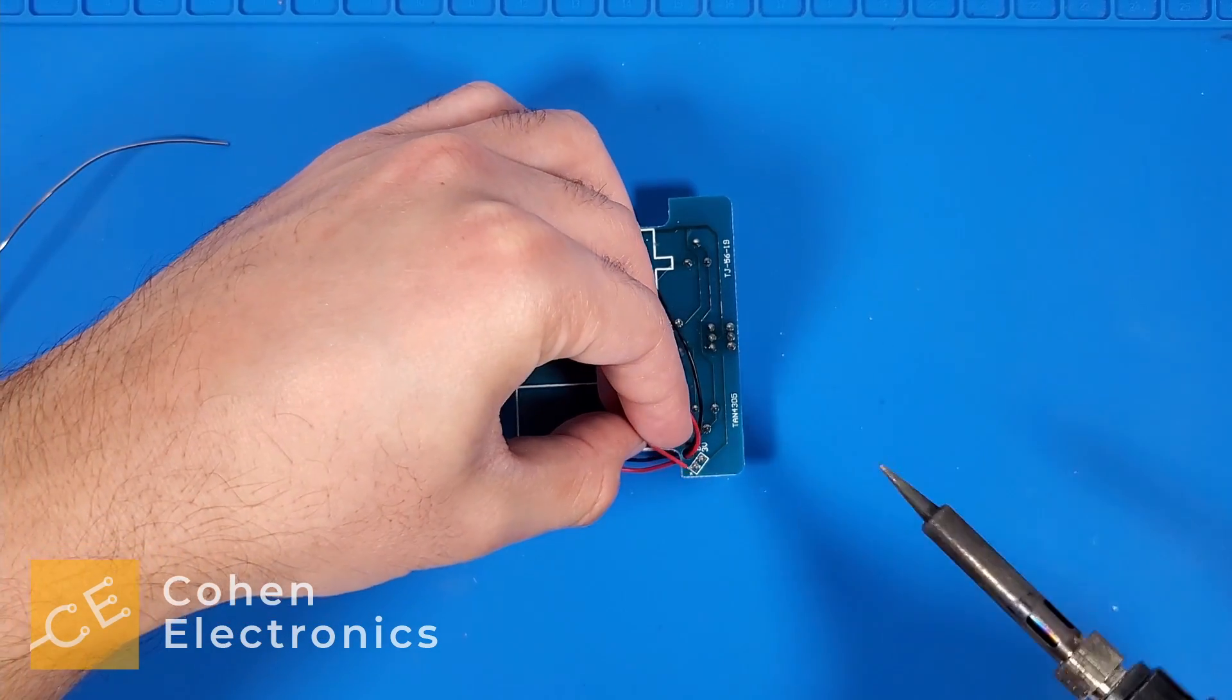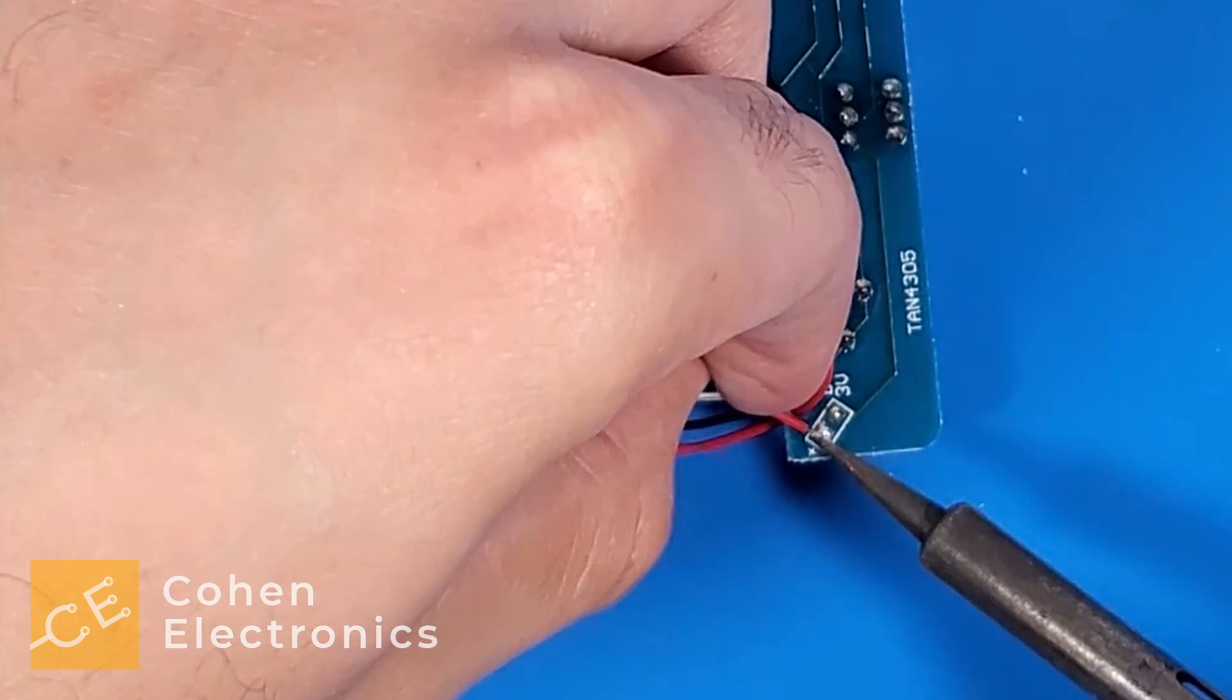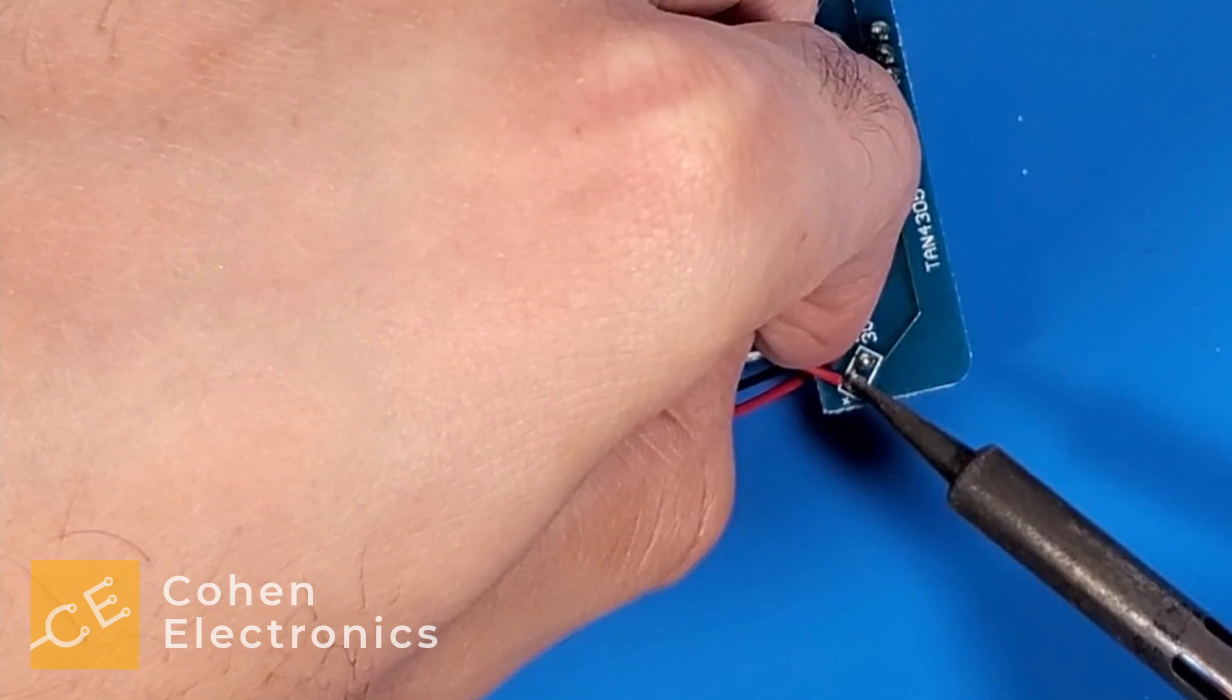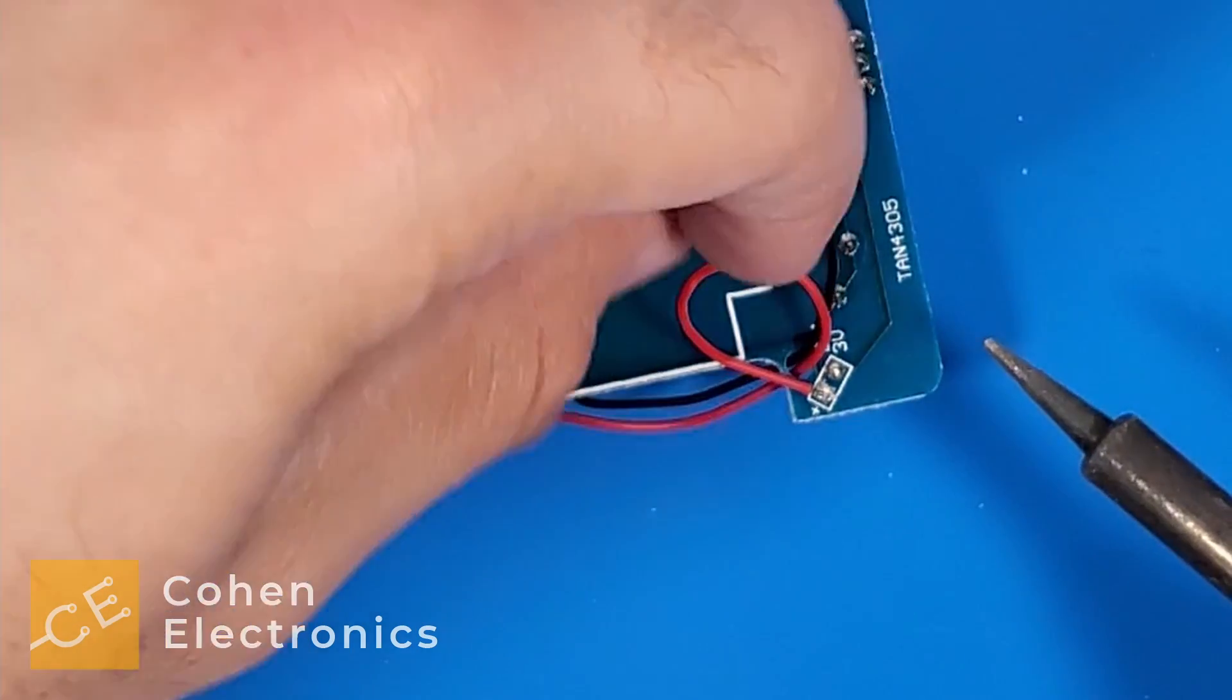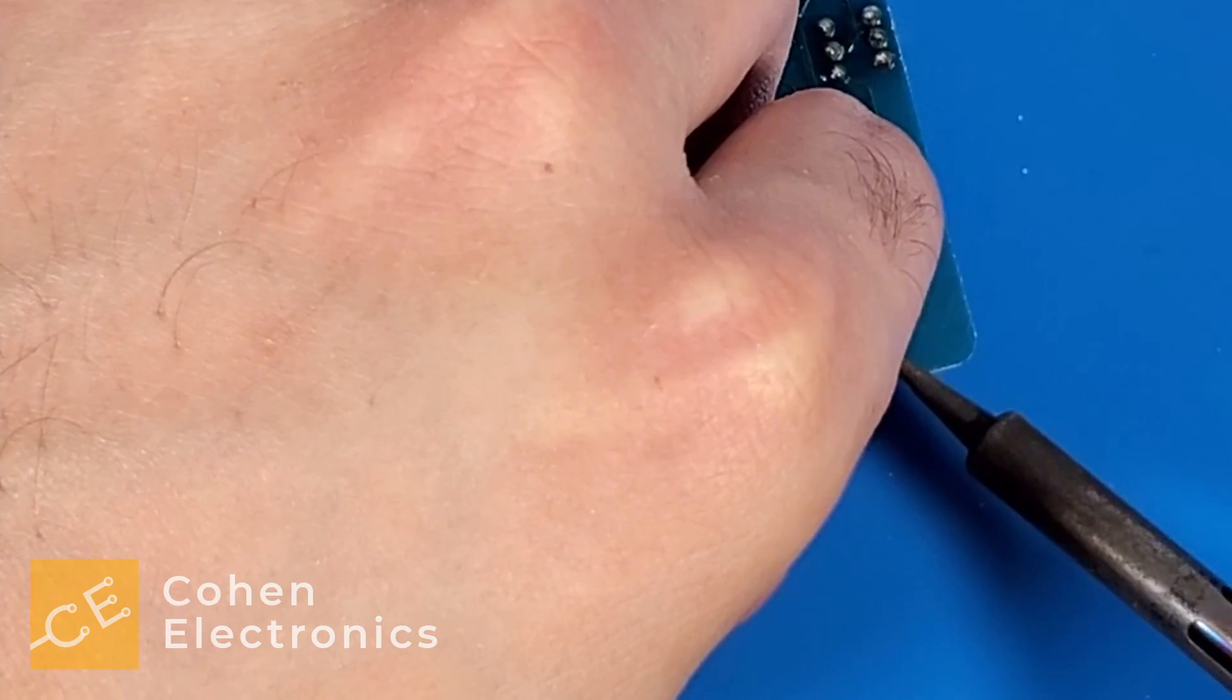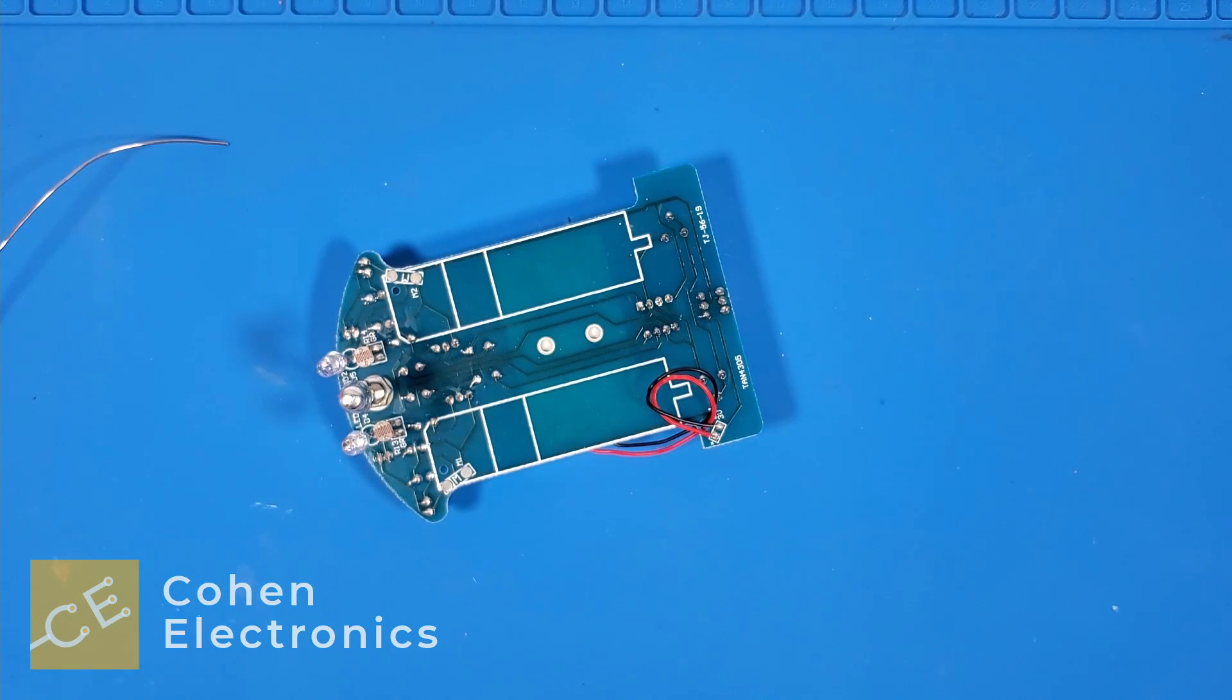Solder the red wire to the bottom positive pad, then solder the black wire to the top negative pad.